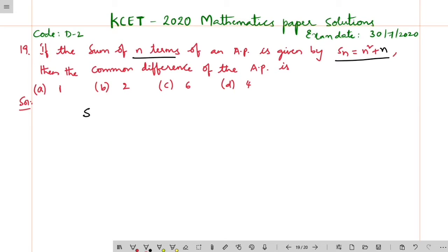Given sum of n terms of an AP is n squared plus n, what is the sum of the first term? That is 1 squared plus 1 equals 2, which implies the first term is 2.